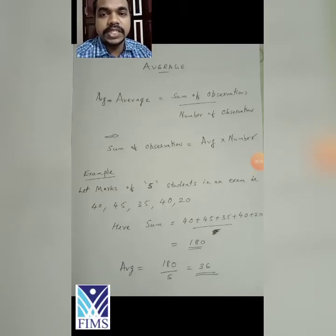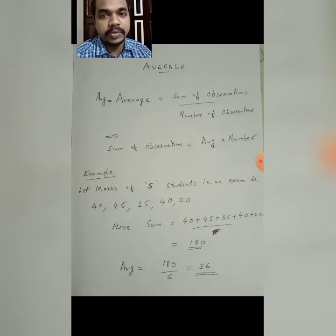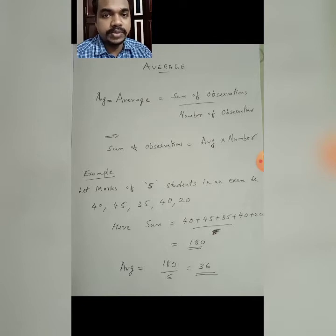Hello, in this video we will discuss a very simple topic from quantitative aptitude, that is average. Average is equal to sum of observations divided by number of observations — that is a very basic formula. From that formula you can create another formula: sum of observations equals average multiplied by number of observations.